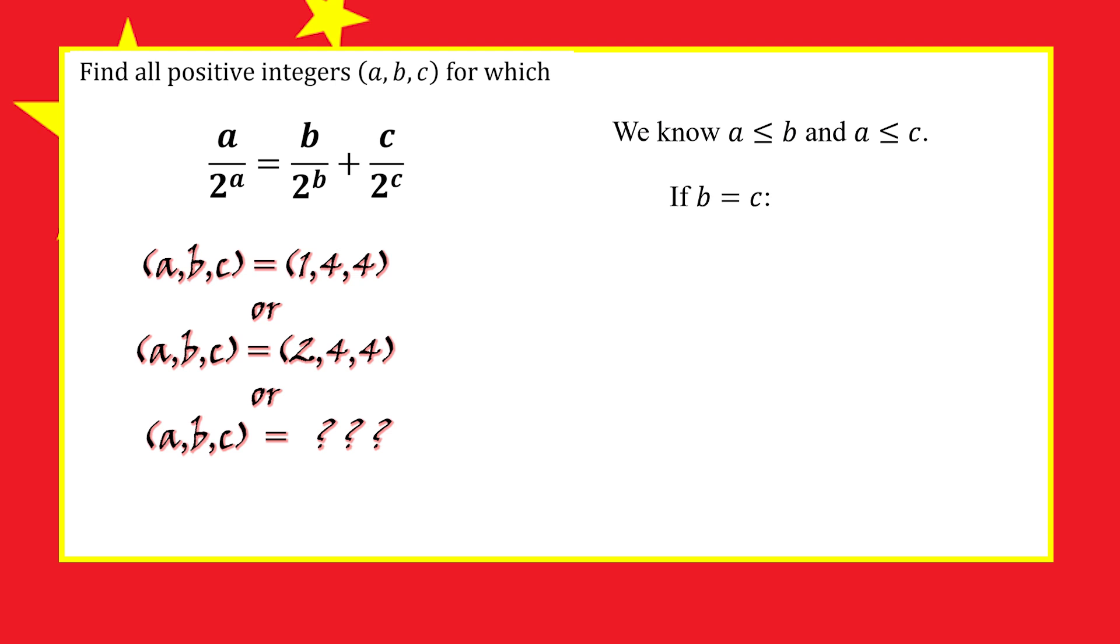If b equals c, we already found some solutions, but let's do it algebraically. Replacing c with b in the equation, we get 2b over 2 to the power b equals a over 2 to the power a. We can cancel a 2 from the left to get b over 2 to the power b minus 1.